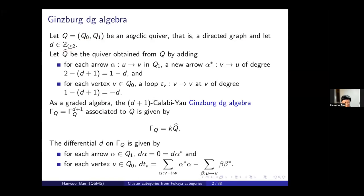We take any integer t greater than or equal to 2, and construct a new quiver Q-hat from Q by adding some arrows. For each arrow alpha in Q, we add its formal inverse alpha-star. For each vertex V of Q, we add a loop T_v at V. The degree of alpha, the original arrow in Q, is 0. The formal inverse alpha-star has degree 2 minus (t+1), and every loop T_v has degree 1 minus (t+1). There is some reason why I use t+1 rather than just t — you will see very soon.